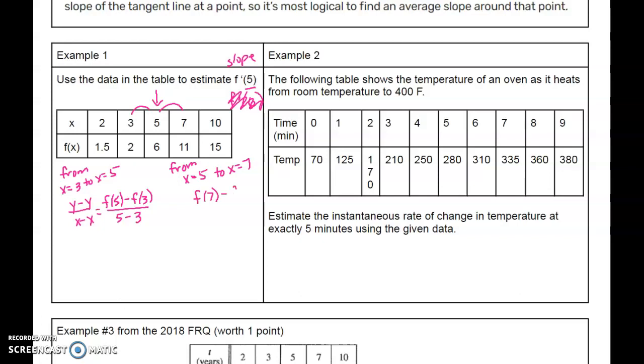So from x equals 3 to x equals 5, and from x equals 5 to x equals 7. We want to find the slope. So f(7) - f(5) over 7 - 5. That's 11 minus 6 over 2, which is 5 over 2, about 2.5. And f(5) - f(3) over 5 - 3 is 6 minus 2 over 2, which is 4 over 2 equals 2.